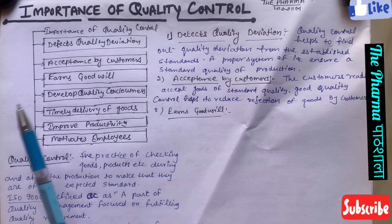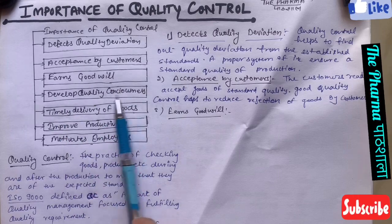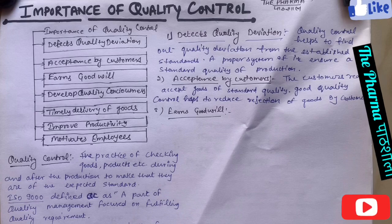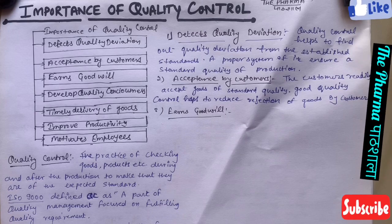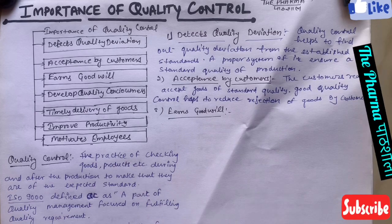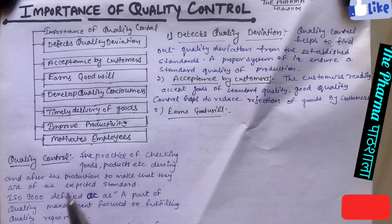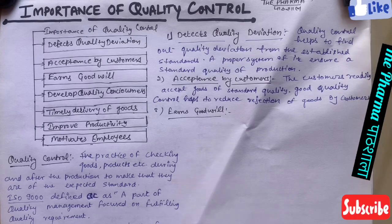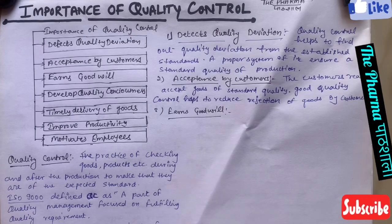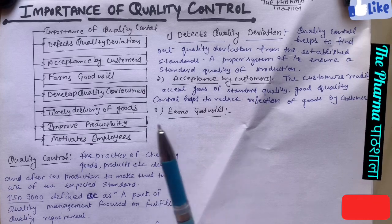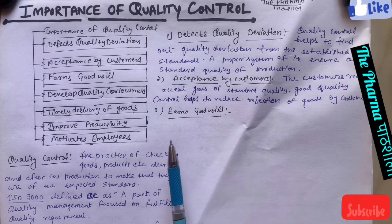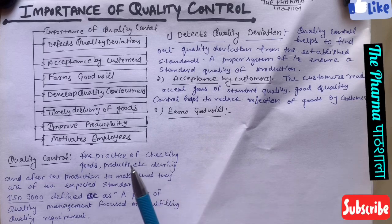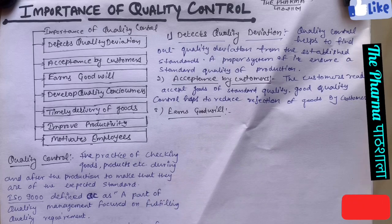Next is the development of quality consciousness। Quality control system एक ऐसी consciousness develop करता है जिससे workers खुद अपनी quality को बेहतर बनाने के प्रति aware होते हैं — so that workers maintain quality in their own work — and which helps us reduce defects and create a defect-free product।